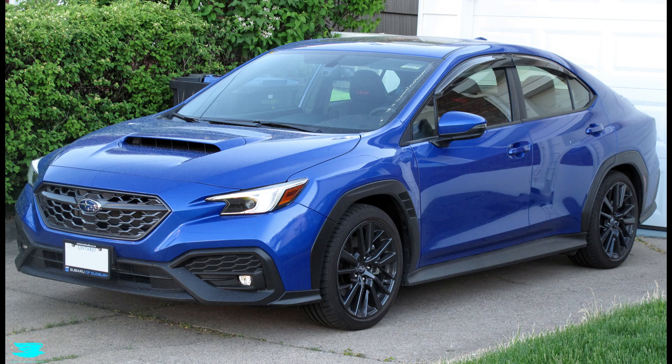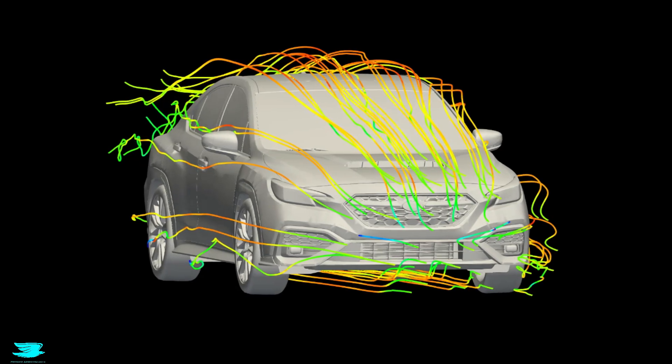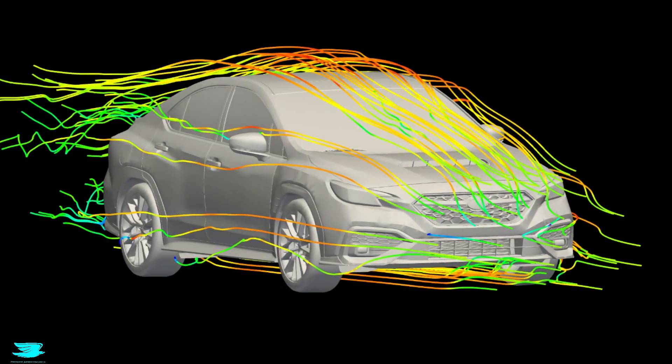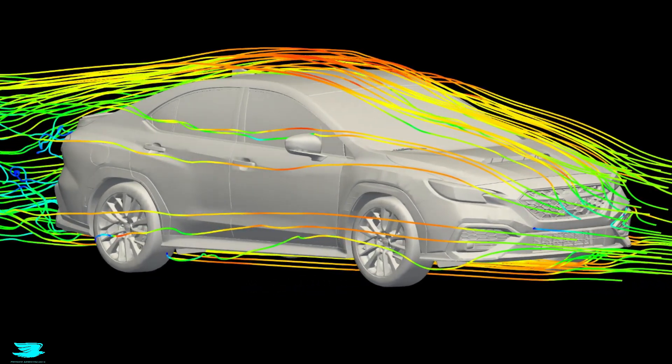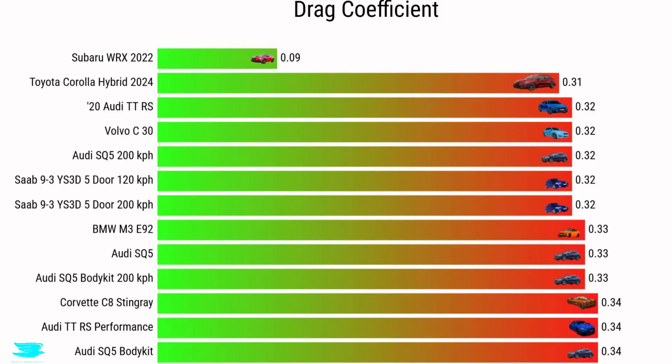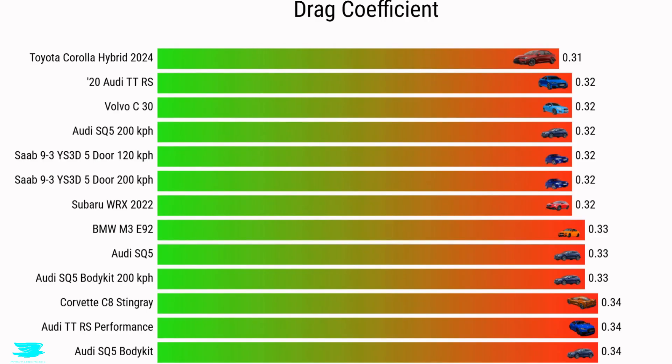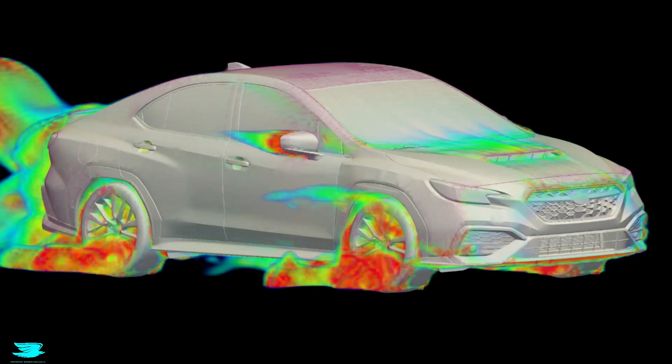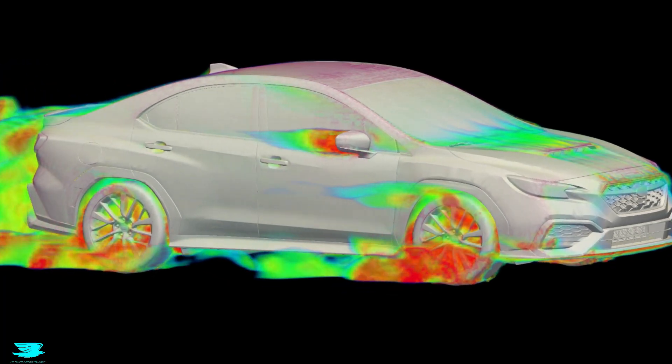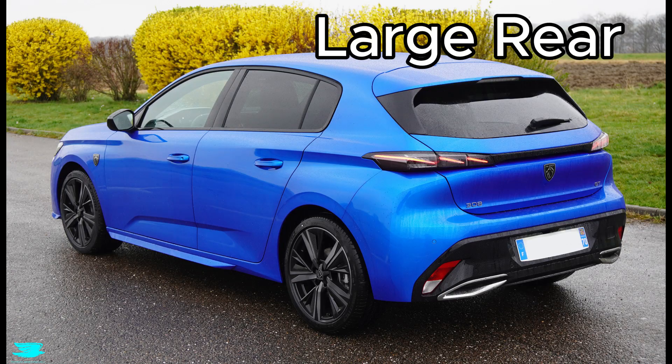As much as it pains me to say it, the Subaru WRX has terrible aerodynamics. We simulated it at 75 mph and it came in with a drag coefficient of 0.32. For a sedan to get a drag coefficient of 0.32 in the 2020s, that's very disappointing. That's worse than a lot of hatchbacks, and hatchbacks are naturally at a disadvantage.